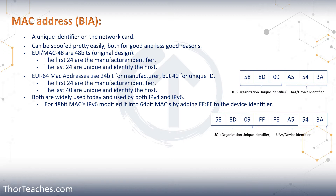With IPv6, they can only use the 64-bit MAC addresses. So if our networking card is older and has a 48-bit address, what IPv6 does is add FFFE in the middle of the address, effectively making it a 64-bit address that IPv6 can use. Looking at the example on the right, the organization identifier is 588D09 and the device ID is A554BA. To make it a 64-bit address, we add FFFE between the organization identifier and the device identifier. This is only used on 48-bit addresses; any newer networking card will have a 64-bit address.